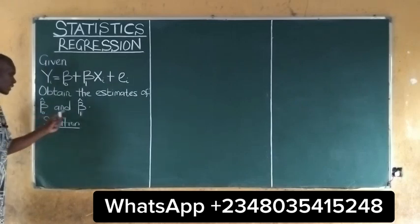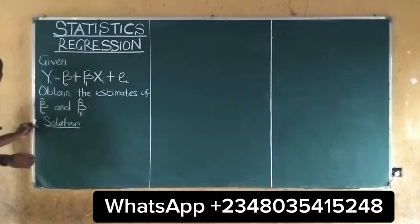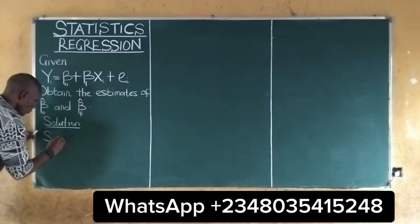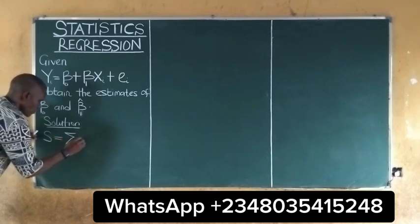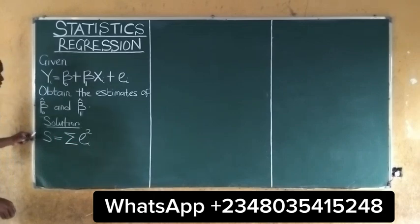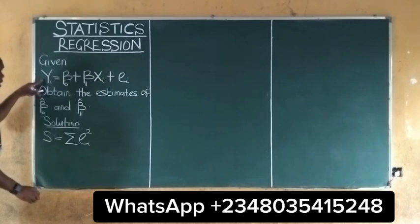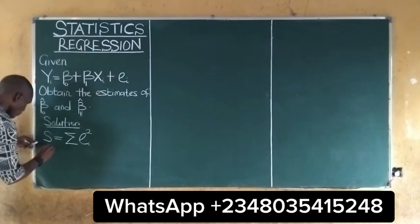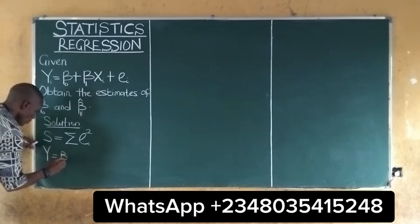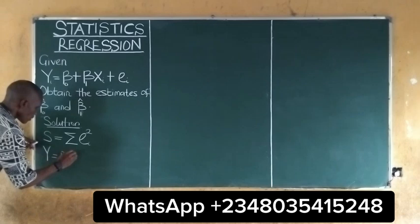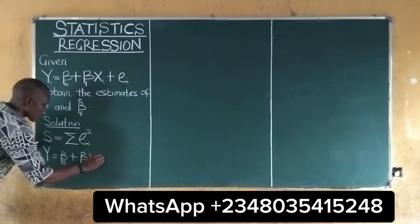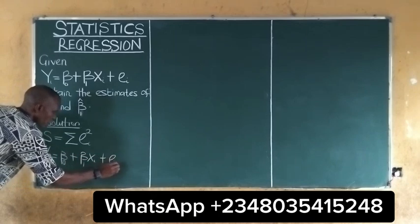To obtain B0 and B1, we employ what is called the standard error. That standard error is equal to the summation of the error term raised to the power of 2. So, since we are given Y equal to B0 plus B1*Xi plus the error term,